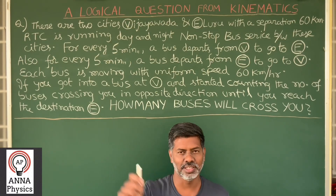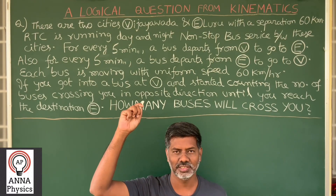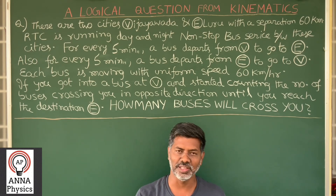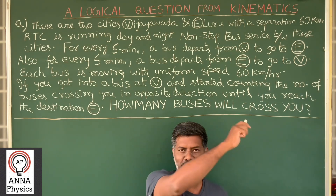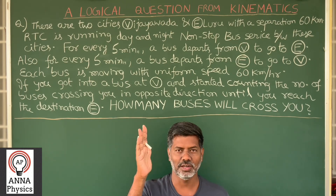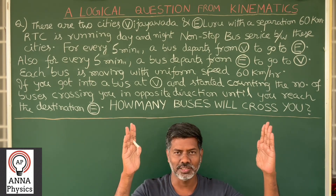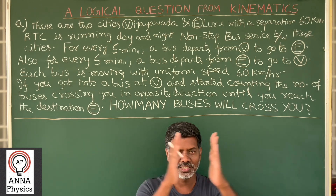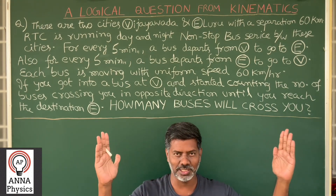Hi, this is a question from the topic kinematics in physics. I suggest this one for students from 9th to 12th standard. Read the question. There are two cities, Vijayawada and Eluru, connected by a straight road, National Highway No. 5. The distance between these two cities is 60 km.